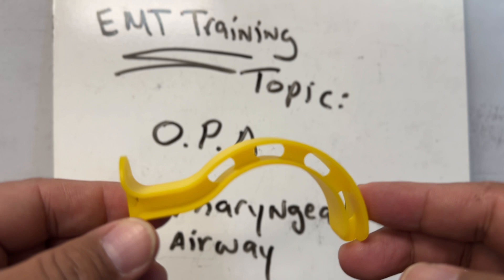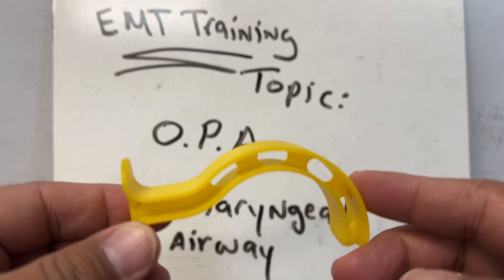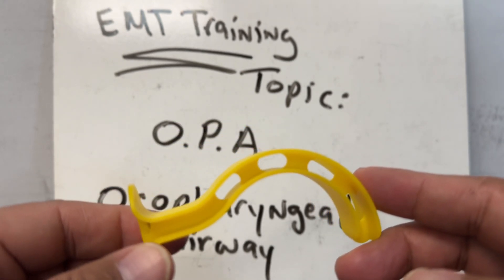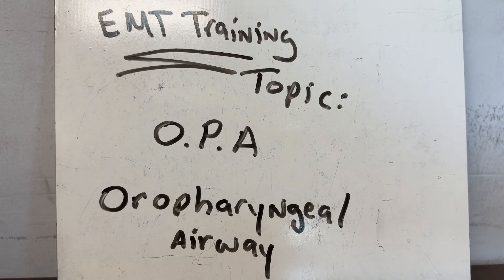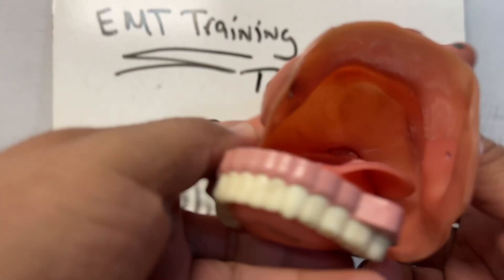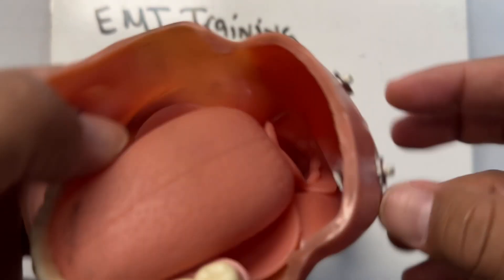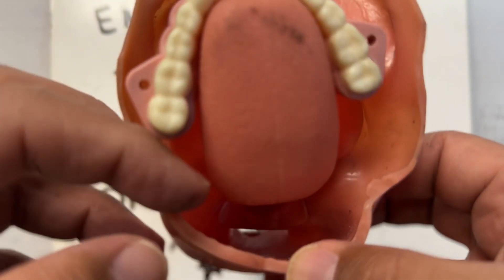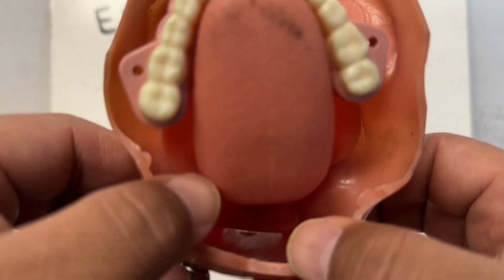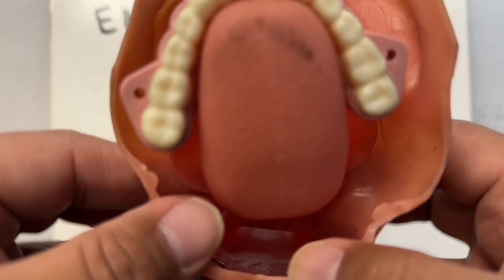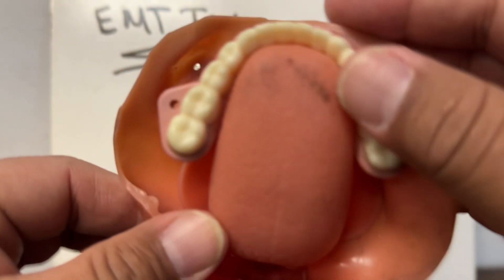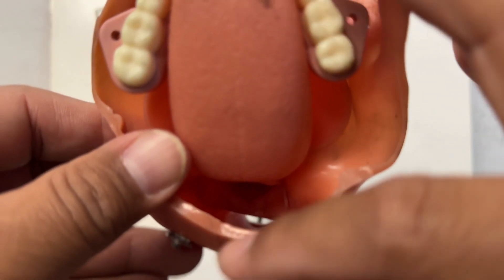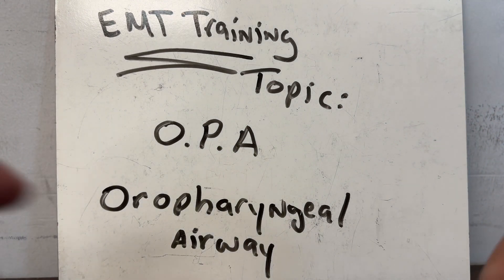There are two main purposes. Number one is to keep the tongue from blocking the upper airway. Here is an example — this patient is laying supine. The esophagus is at the bottom, and the airway is here. When patients are unresponsive, the tongue falls down and blocks the airway, so we use the head tilt chin lift or jaw thrust and then add an adjunct.